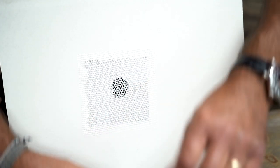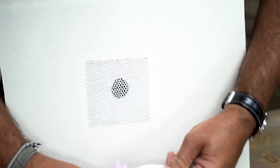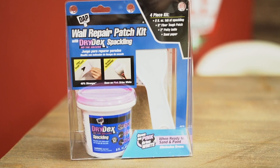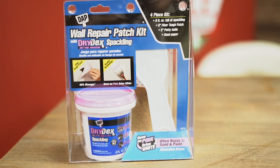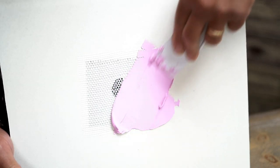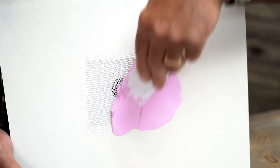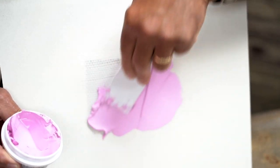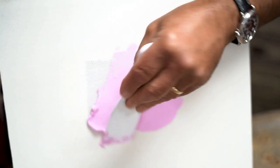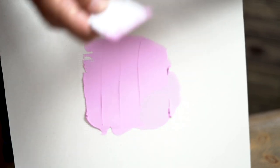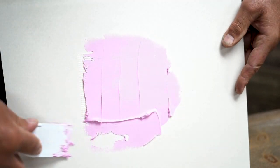Now I'm going to use a little lightweight spackle. This particular product is called Drydex by DAP and it goes on pink. What I like about this one is when it's dry, it turns white, so you know when it's time to do a little bit of sanding and then you can paint it. And the other thing is with this particular wall spackle, you don't have to prime it. You can just go right over it with a paint and primer in one.